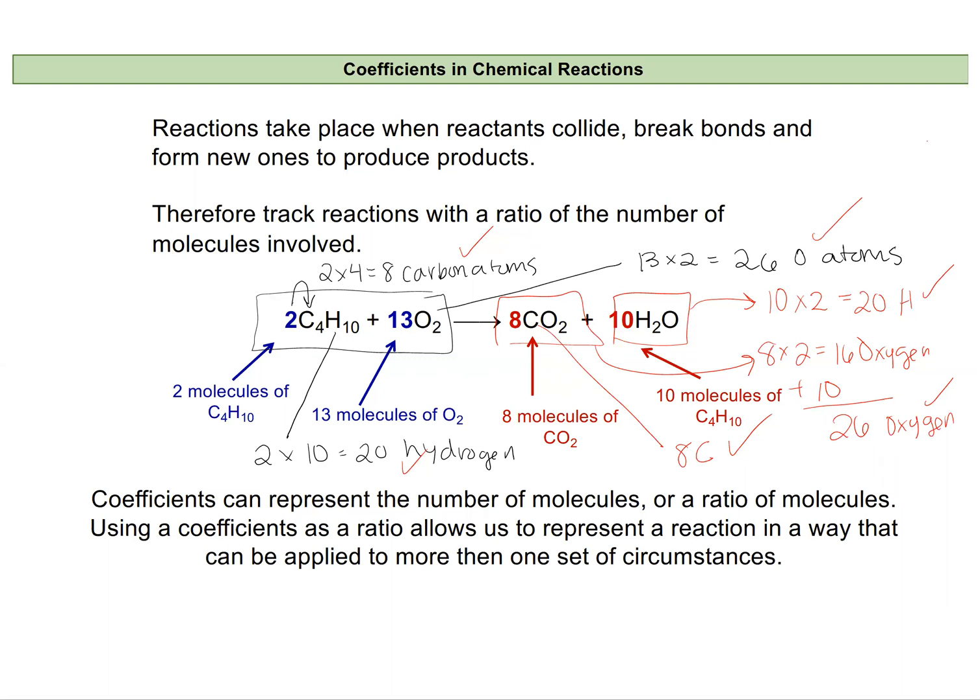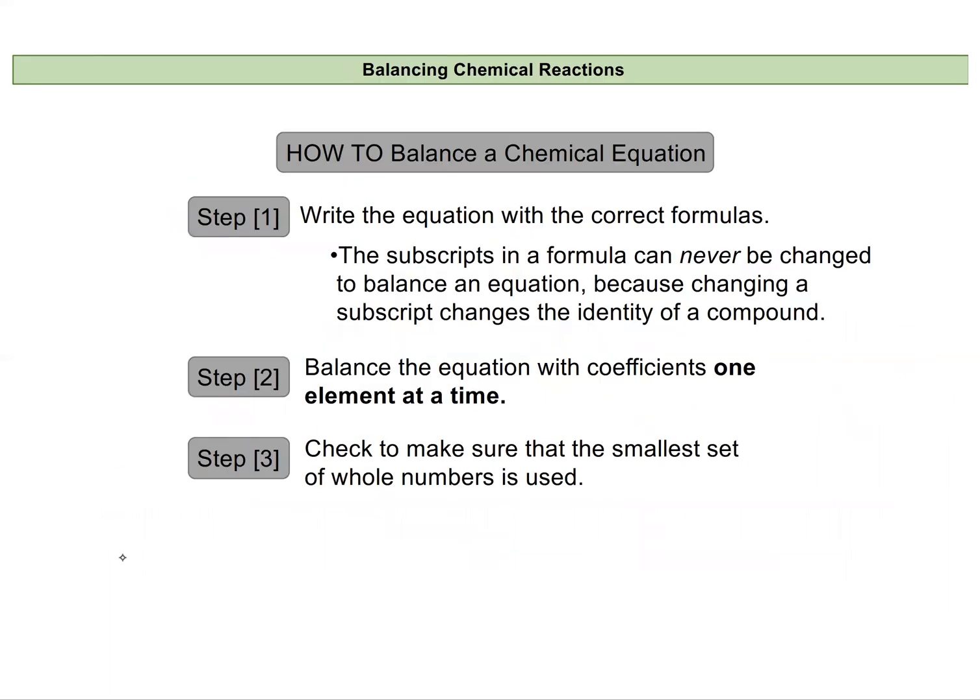And so just tracking the number of molecules is one way to do this. Although, as this reaction gets larger, and we do it actually on a macroscopic scale, it'll be annoying to say how many molecules we actually have, because there'll be so many of them. And so we use these coefficient numbers as a ratio of molecules, or as we'll see soon, moles of molecules.